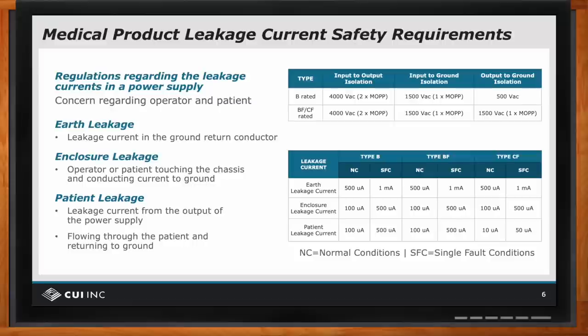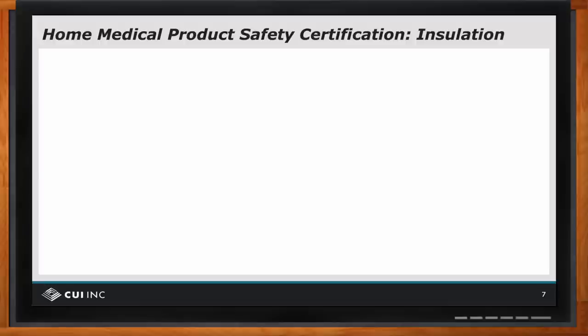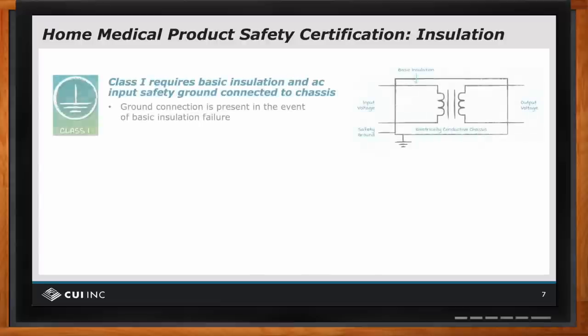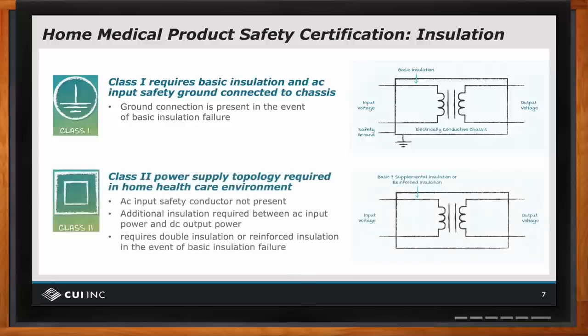Insulation is an important factor of safety, all to keep somebody from getting electrically shocked. There are two common classes of insulation. Class one has the AC input safety ground connected to the equipment, so only basic insulation is present inside — if that fails, the ground conductor carries the current away from the user. In class two, there is no safety earth ground, so you have two layers: basic insulation and a reinforced second layer. Importantly, home health care requires class two, because we can't be certain that an earth ground is always present in a home environment, whereas in certain commercial medical environments, class one equipment can be used.